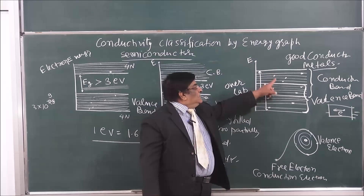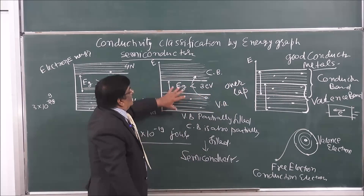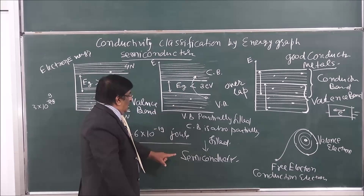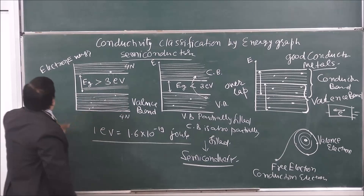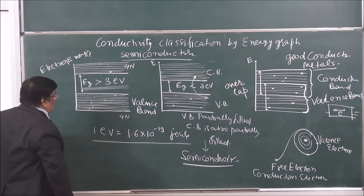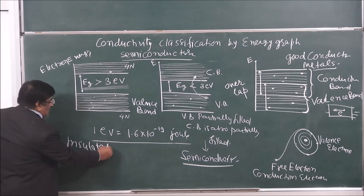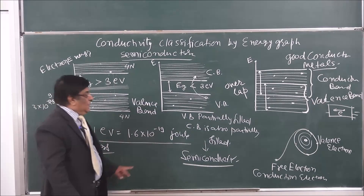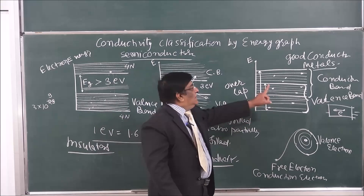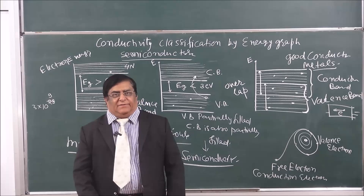So in metals, the energy band graph shows an overlap between the valence band and conduction band. This is the energy band graph for semiconductors — with a small energy gap. And this is the energy band graph for insulators — with a large energy gap greater than 3 electron volts. We have thus explained insulators, semiconductors, and conductors on the basis of energy band graphs.